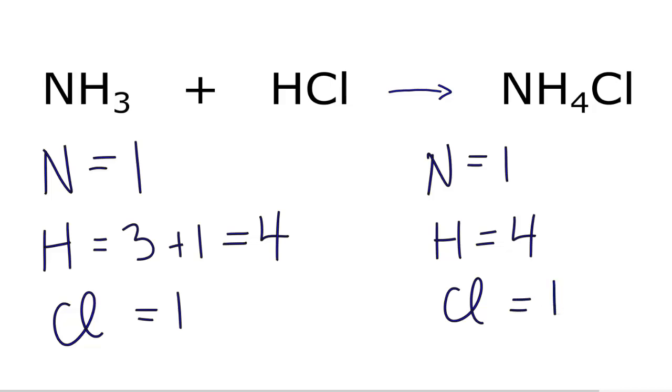So if you look at these numbers, everything's the same. That means that this equation, NH3 plus HCl yields NH4Cl, is actually balanced. So you don't need to do anything. If you were asked to report the coefficients, you could just say that they're one. One, one. And that would be correct.